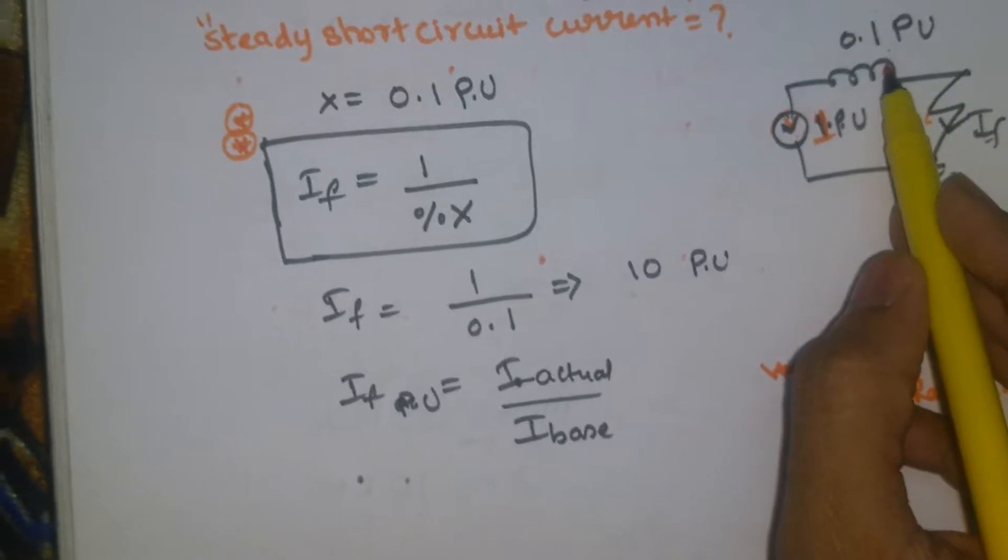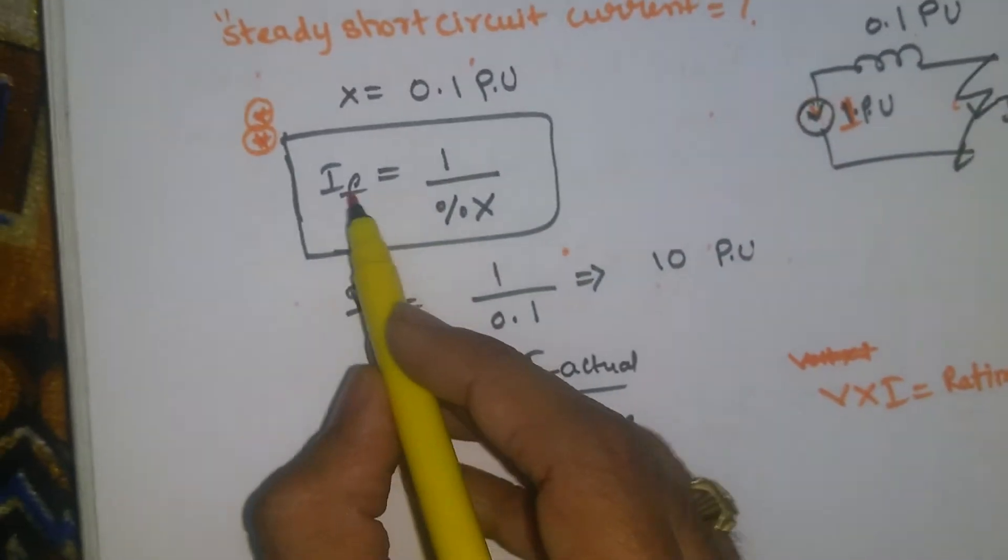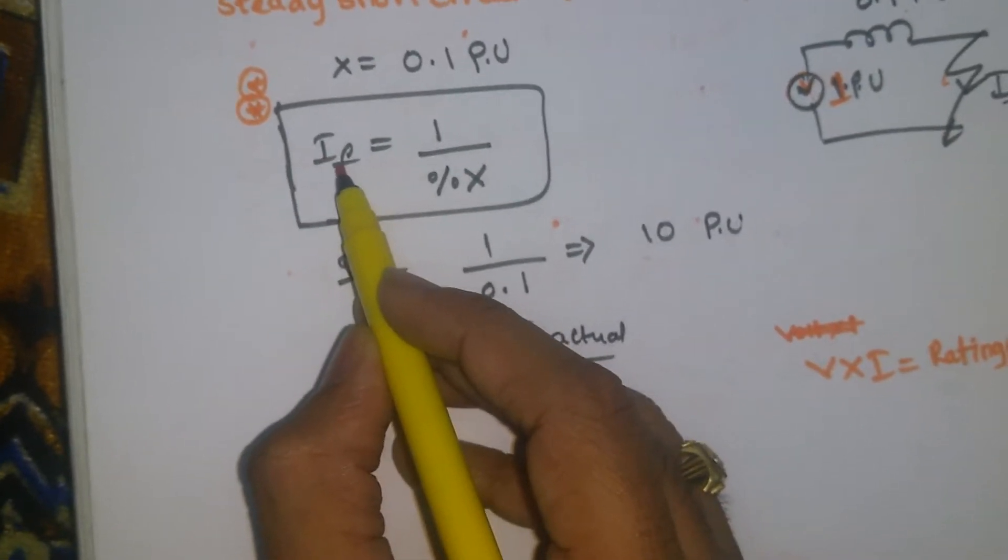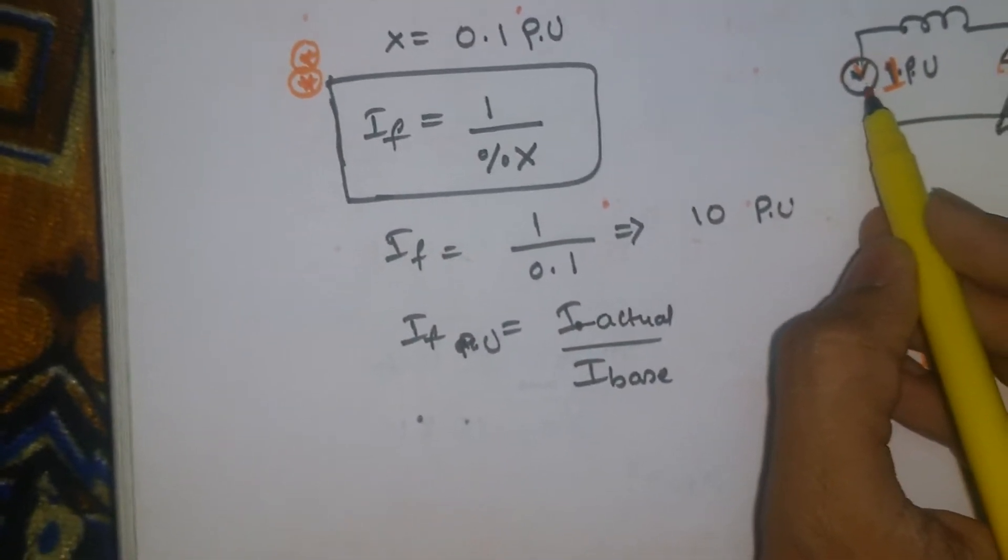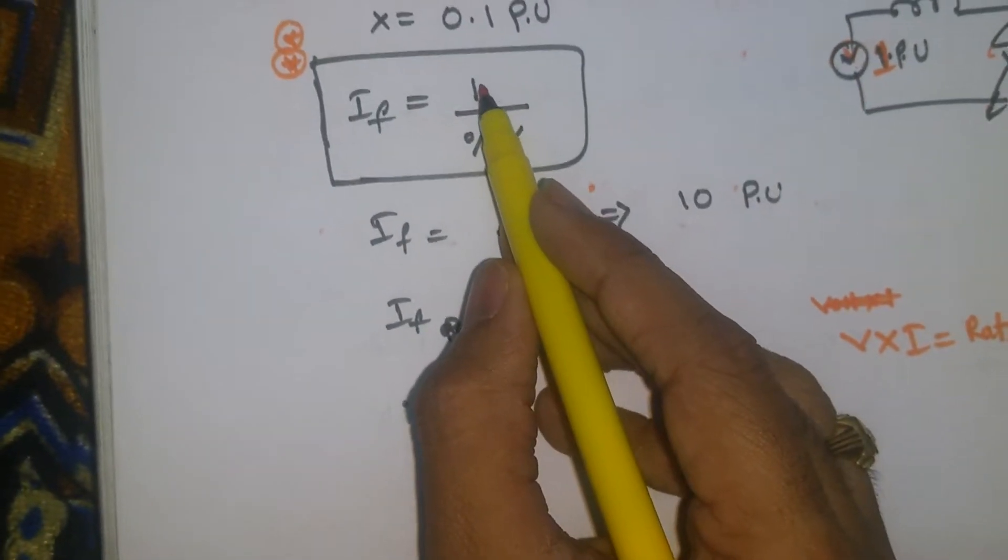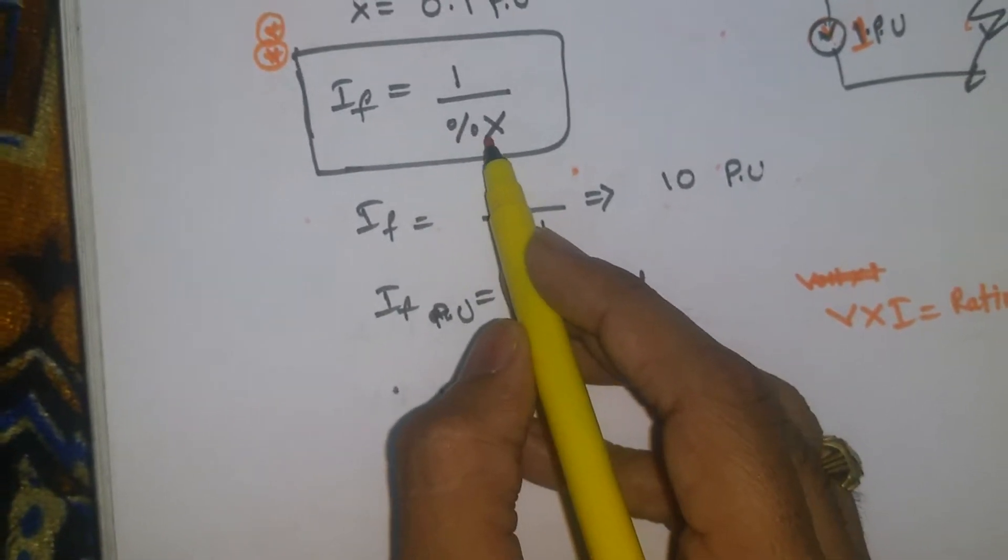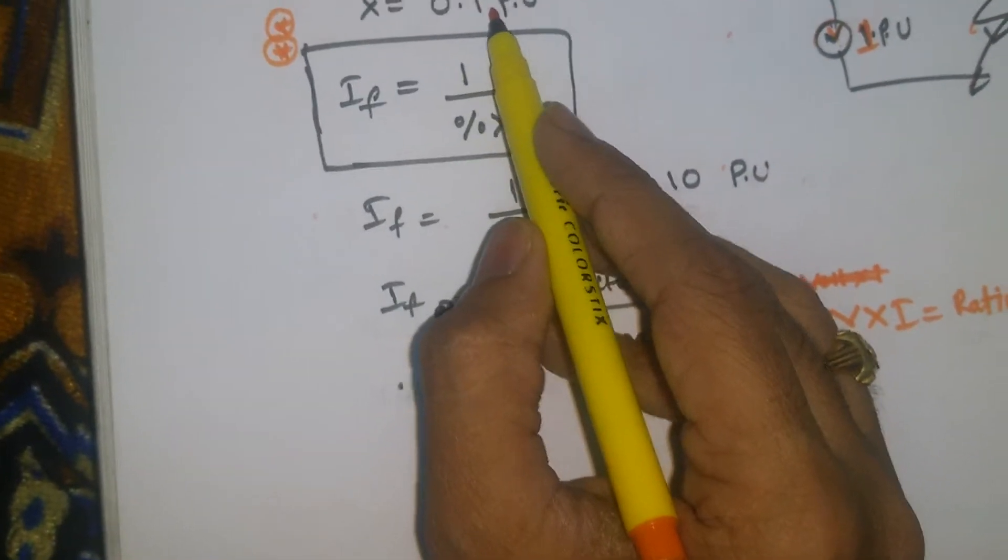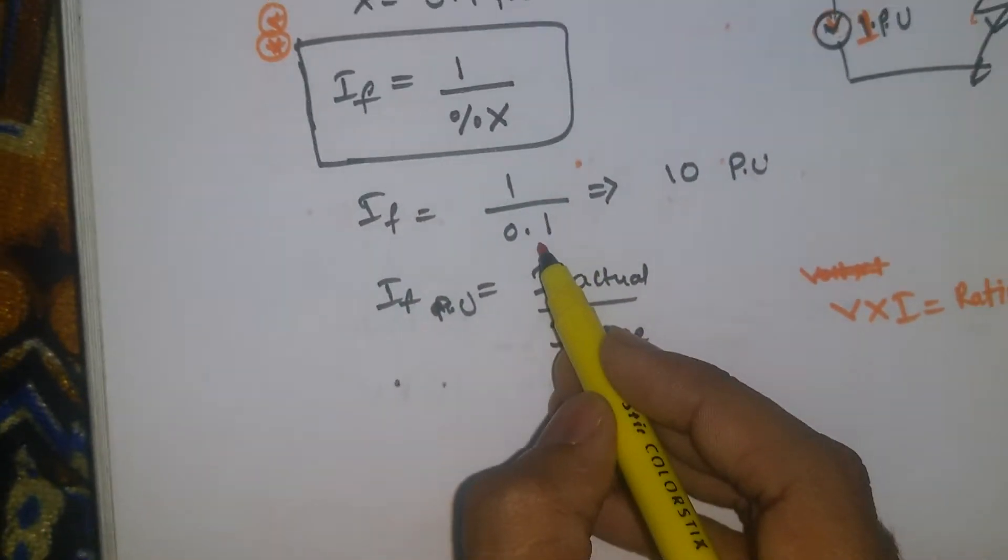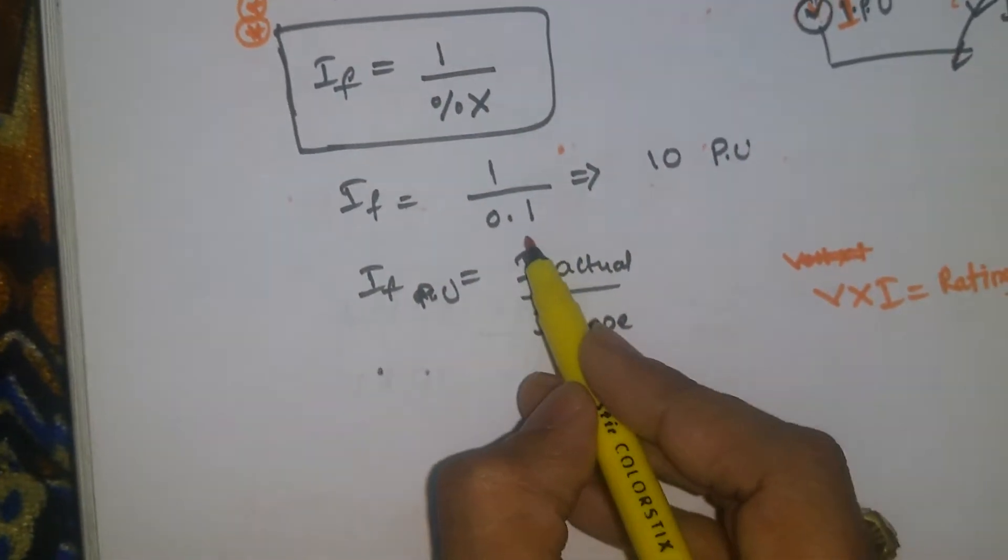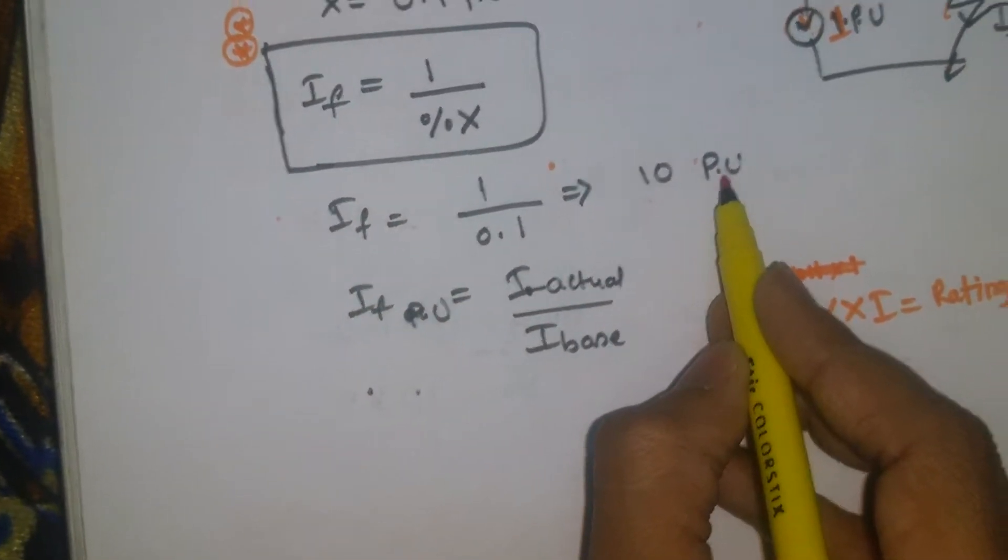Simple, we have a voltage source, we have an impedance, we need to find the current. V is equal to IR, so V by R is equal to I. Like that only, fault current we need to find. So the voltage is 1 per unit, so V is equal to 1 by percentage X. In the place of R, I am giving percentage impedance value. So I have value in per unit system, that is 10.